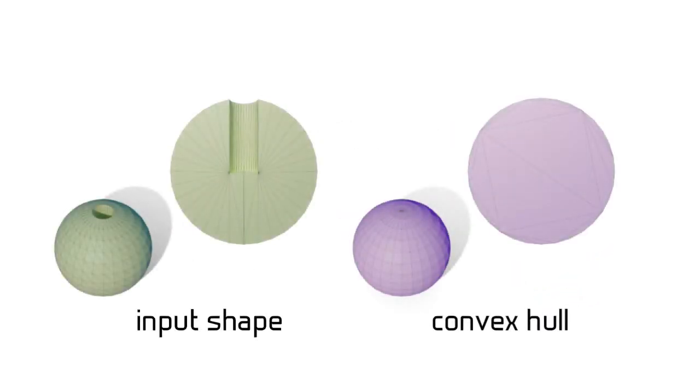For example, in this sphere with a tiny deep hole, the volume difference between the shape and its convex hull may be very small, but there are significant differences between the boundaries.